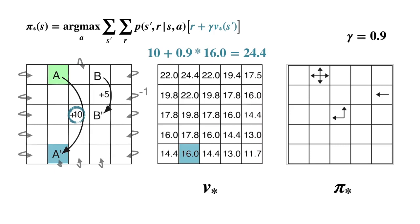V-star for state A is 10 plus gamma times V-star of A-prime. 10 plus 0.9 times 16 is equal to 24.4, which is indeed the recorded value for V-star.